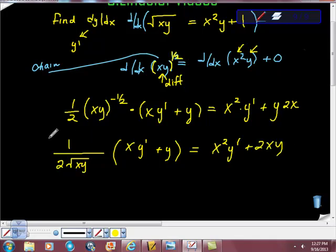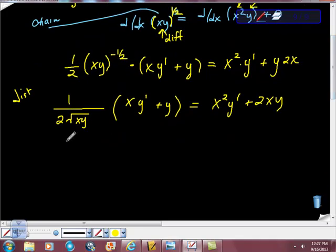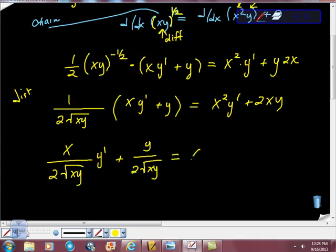I guess I'll clean this up the best that I can. I'm going to call this 1 over 2 square roots of xy, because this negative 1 half is a, right? I'm not going to do anything with this, except mention the fact that I intend to do something with it. So xy prime plus y is equal to, and this is x squared y prime plus 2xy. Now what I'm going to do is I'm going to go ahead and distribute. So I'm going to distribute on the left-hand side, just doing algebra here, and that gives me x over 2 square roots of xy.